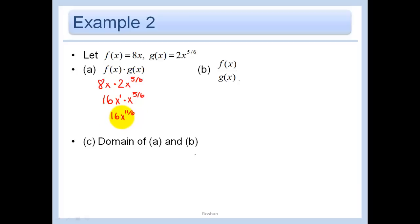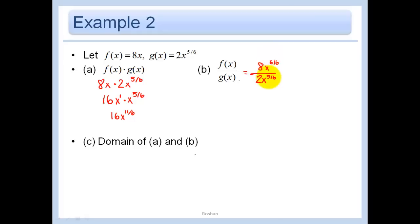f of x divided by g of x gives us 8x divided by 2x to the 5/6. We can write x as x to the 6/6 to get a common denominator. Same base, subtract: 8 divided by 2 is 4, and 6/6 minus 5/6 leaves us with x to the 1/6 on top. So we get 4x to the 1/6.